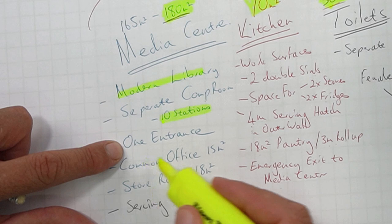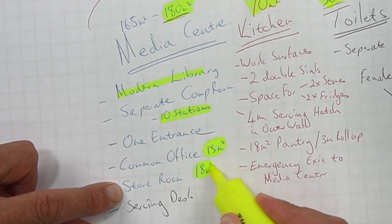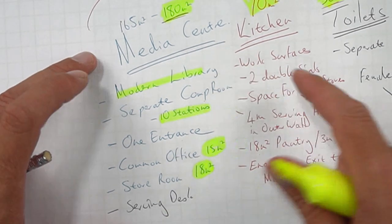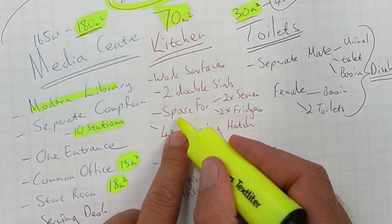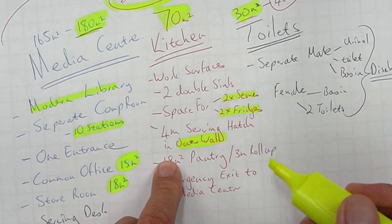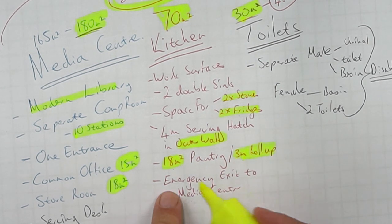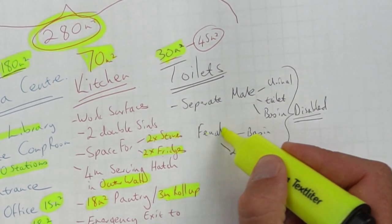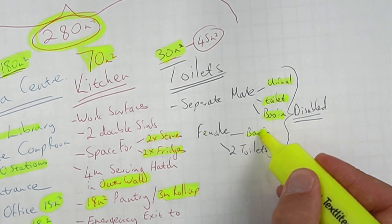In the media center you need: a modern library, a separate computer room with 10 stations, one entrance, a common office of 15 square meters, a storeroom of 18 square meters, and a serving desk for checking out books. In the kitchen you need sufficient work surfaces, two double sinks, space for two stoves and two fridges, a four-meter serving hatch in the outer wall, an 18 square meter pantry with a three-meter roll-up door, and an emergency exit leading into the media center.